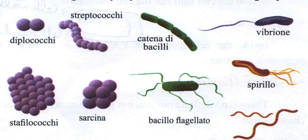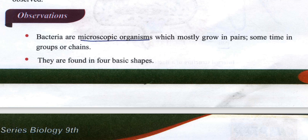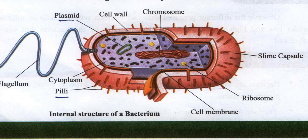You can observe the different types of bacteria on the screen. Now you can observe observations related to bacteria, along with a labelled diagram of the bacterium — a single cell of bacteria.